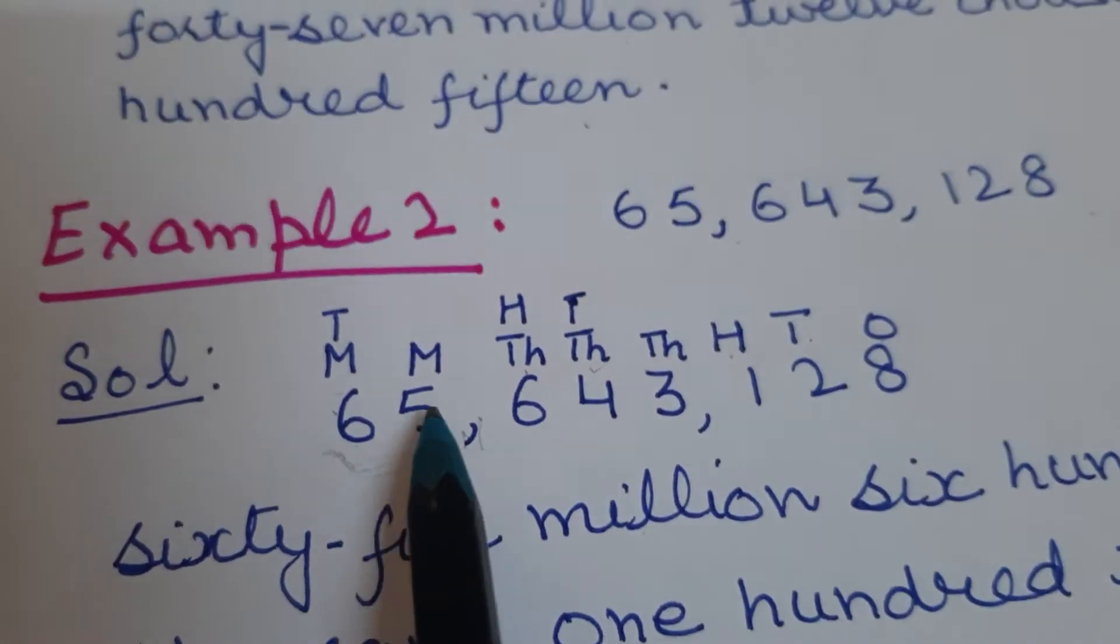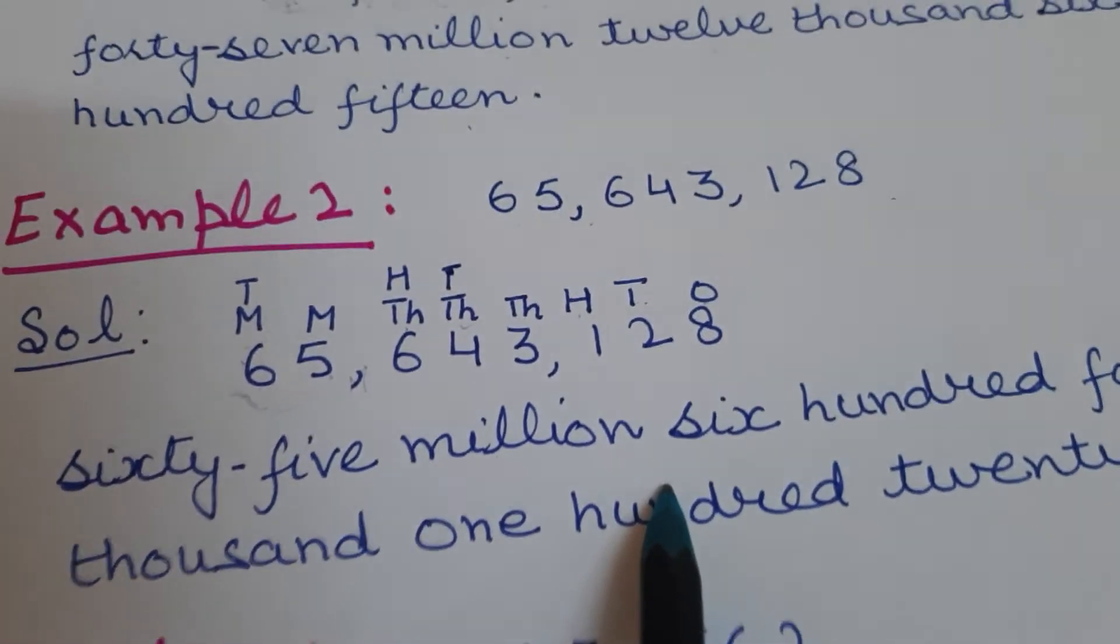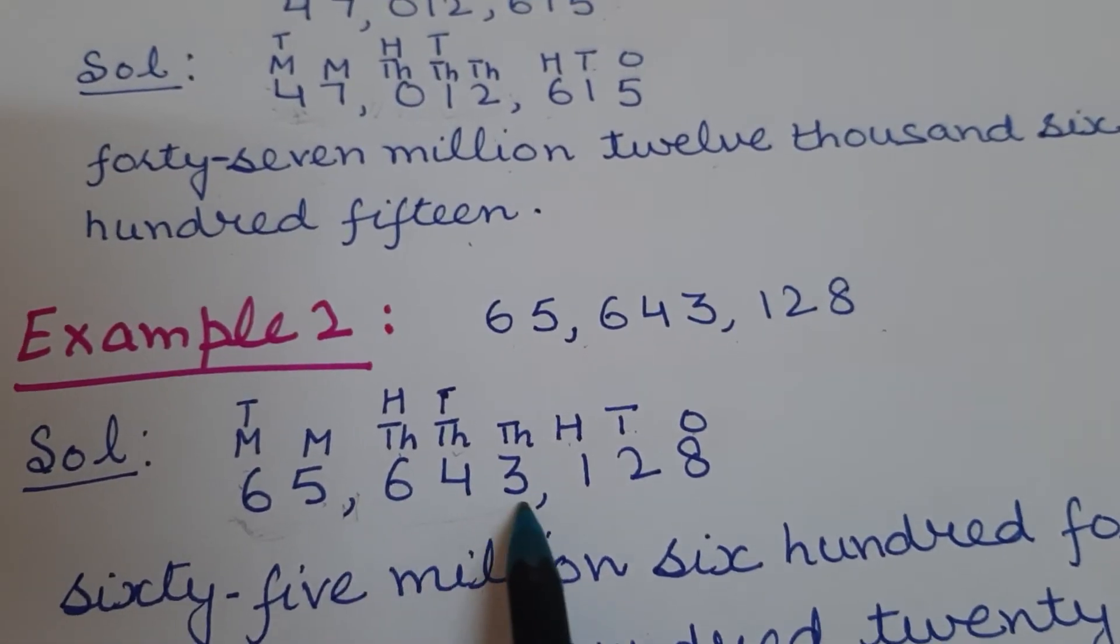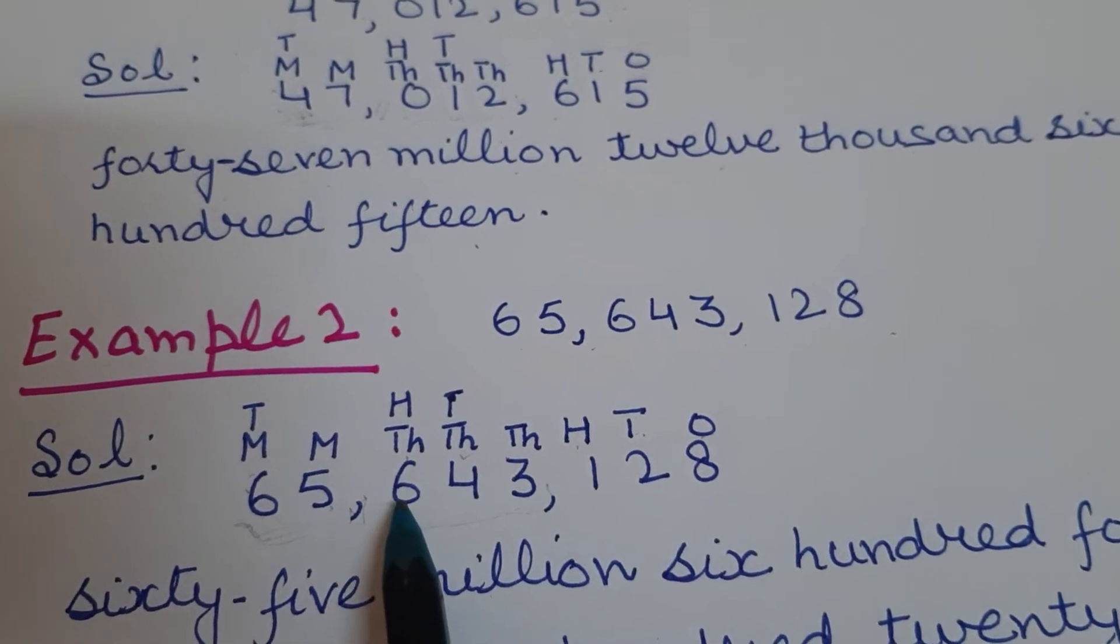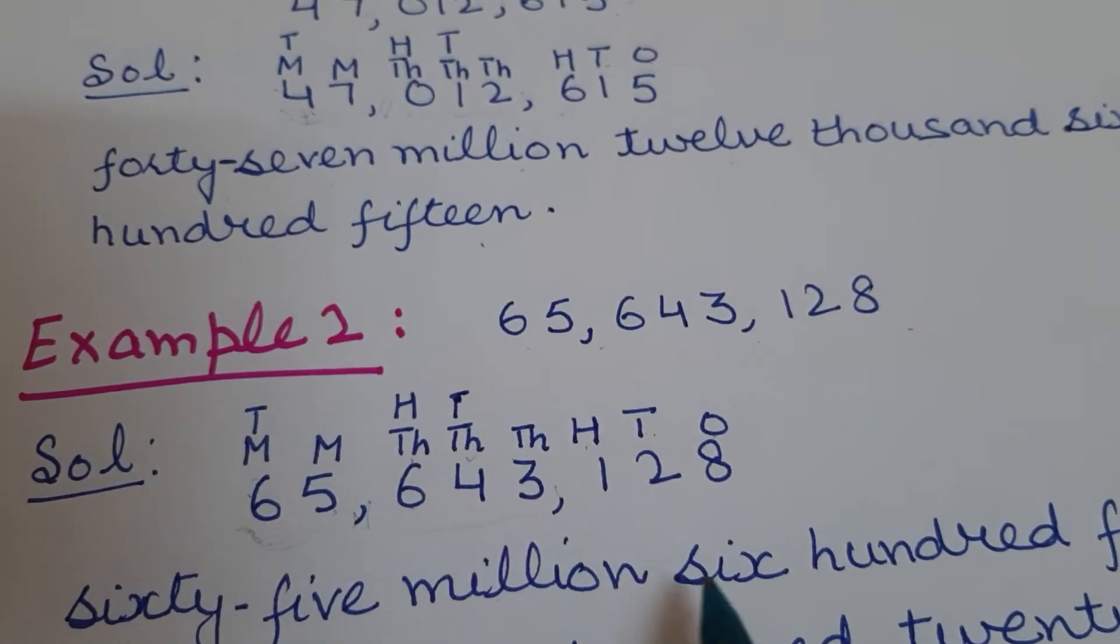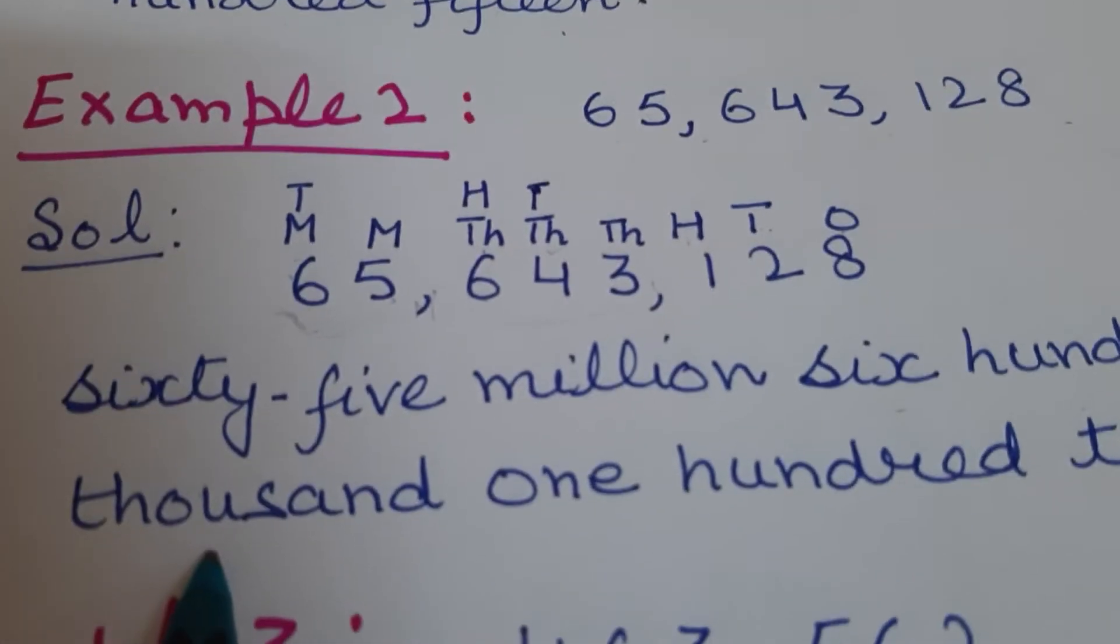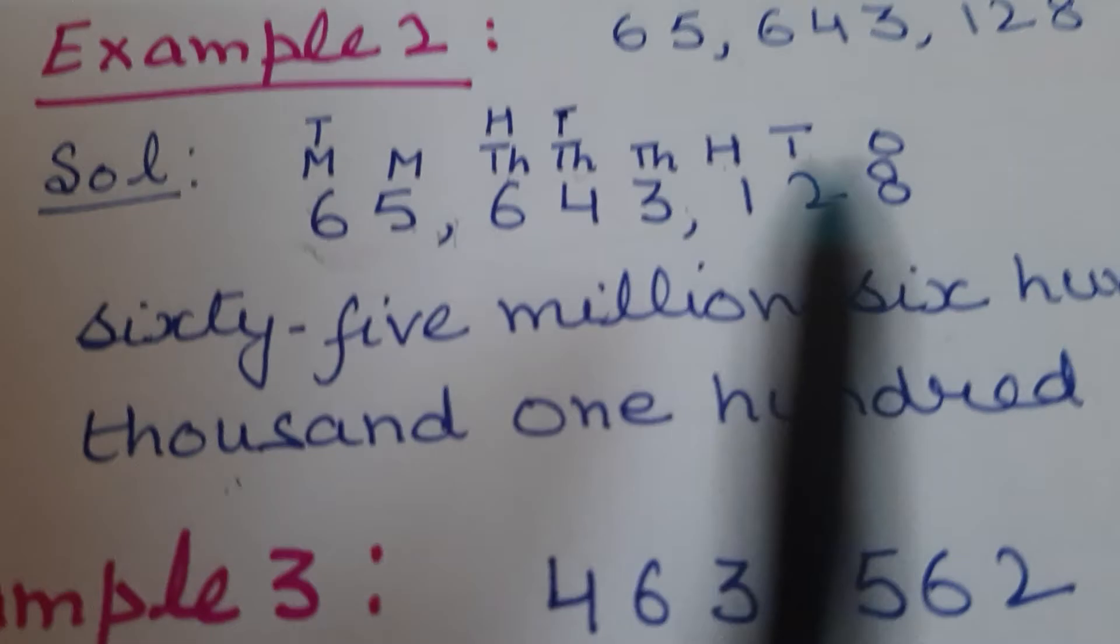In million what is given? 65. So 65 million. In thousand period what is given? 643. 643 thousand. This is thousand period.